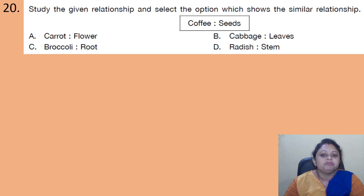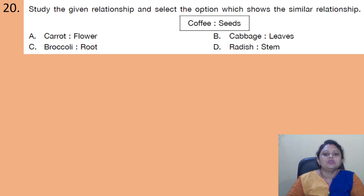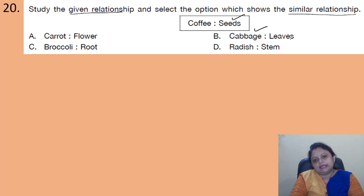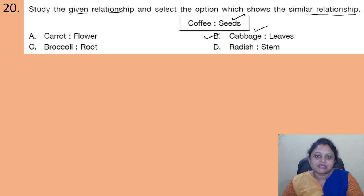Coming to the next question: study the given relationship — coffee: seeds — and select the option which shows a similar relationship. Options: A - carrot: flower; B - cabbage: leaves; C - broccoli: root; D - radish: stem. Coffee comes from seeds; similarly, cabbage consists of leaves. The correct answer is option B — cabbage: leaves. In today's session we discussed previous year NSO Level 2 exam questions. In the next session we'll discuss more such questions. Read mindfully — bye everyone!